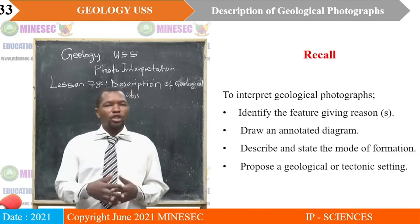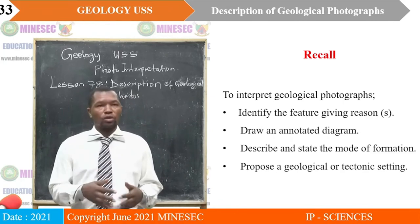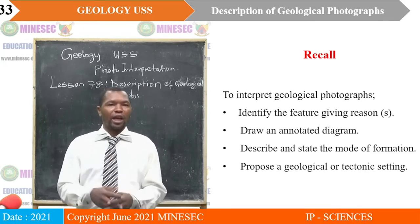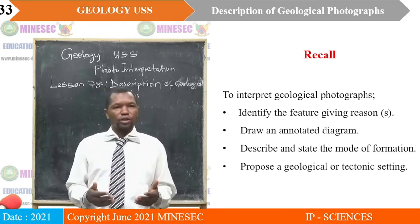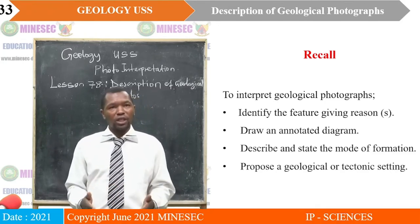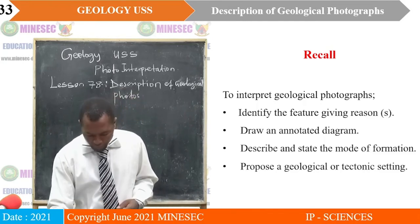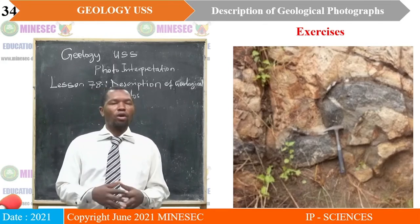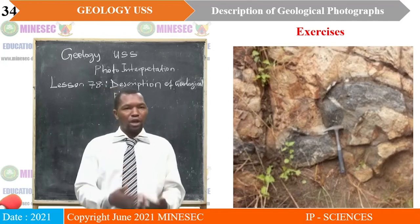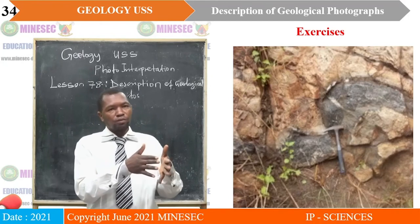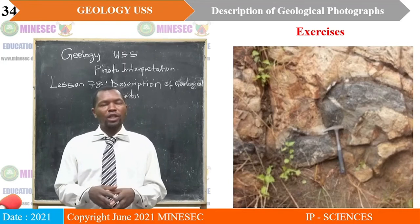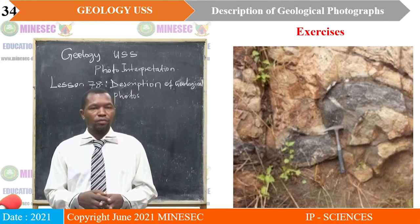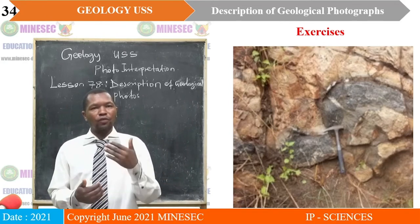Recall that to interpret geological photographs: first, identify the feature giving a reason; secondly, draw an annotated diagram; thirdly, describe and state the mode of formation; fourthly, propose a geological or tectonic setting for the identified feature. It is very obvious that photographs best reveal the relationship between rocks and structures, so we adopt the photo method. Stereograms, histograms, and cumulative frequency curves cannot reveal that relationship as easily as photos and maps will.